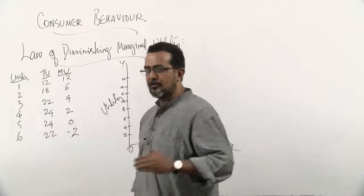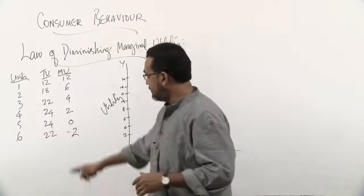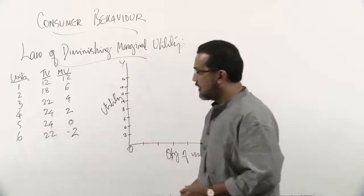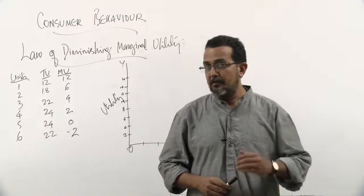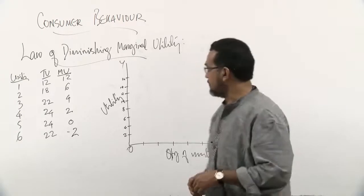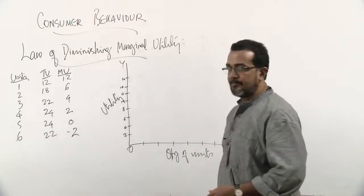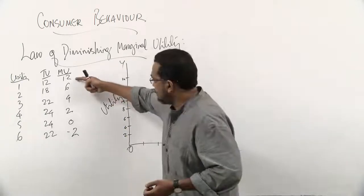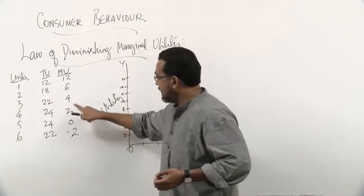With the fourth unit you get only 2 utils of satisfaction. By the fifth unit you are no longer enjoying the chocolate, and with the sixth unit you actually have a distaste — a problem. So what you see here is: when you continuously consume any commodity, however favorite it may be, beyond a certain point you start experiencing disutility. That is exactly what the law of diminishing marginal utility explains — as you continuously consume a commodity, the additional satisfaction derived with each unit goes on diminishing.